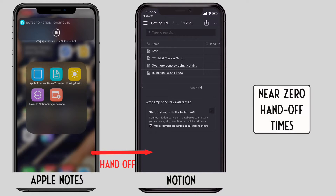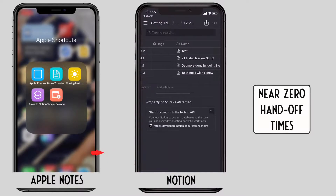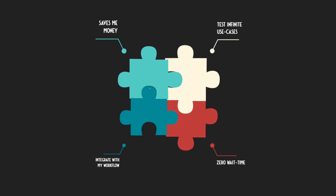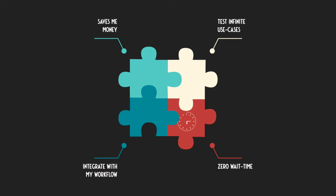But why would I want to use Shortcuts? For starters, Shortcuts eliminate the need for an integrator like Zapier or Automate.io. Secondly, the handoff time between the desktop and the cloud is almost zero after you push the transaction. So in effect, this saves me money, allows me to test my use cases infinitely, and integrate this really well into my existing workflow and view things immediately.